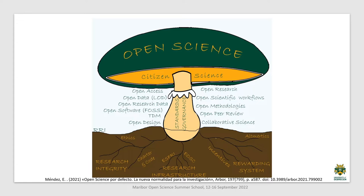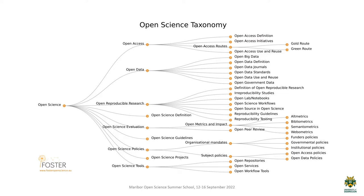We need governance, infrastructures, research integrity, rewarding systems, and so on. Here on the slide you can see the open science taxonomy, which shows the complexity and how different aspects of open science we are talking about. It is included in all segments of the research process. What is open science about and why are we trying to have this as a default? Because we have continuous change in technology, continuous change in evaluation of results, reproducibility, transparency, and sustainability.